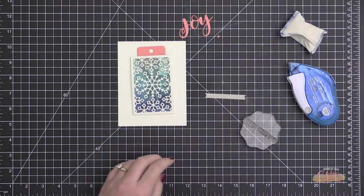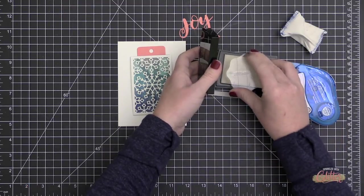I'm just going to add a little tape runner adhesive onto it and adhere my gift card onto it. It's going to act as a little pull tab for the gift card once it's inside the pocket.